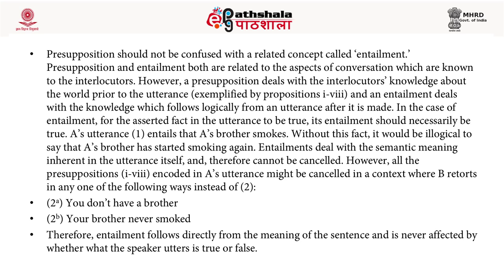However, all the presuppositions 1 to 8 encoded in A's utterance might be cancelled in a context where B retorts in one of the following ways instead of simply saying 'Really?': B might say 'You don't have a brother' (utterance 2A), or 'Your brother never smoked' (utterance 2B). Entailment, therefore, follows directly from the meaning of the sentence and is never affected by whether what the speaker utters is true or false.